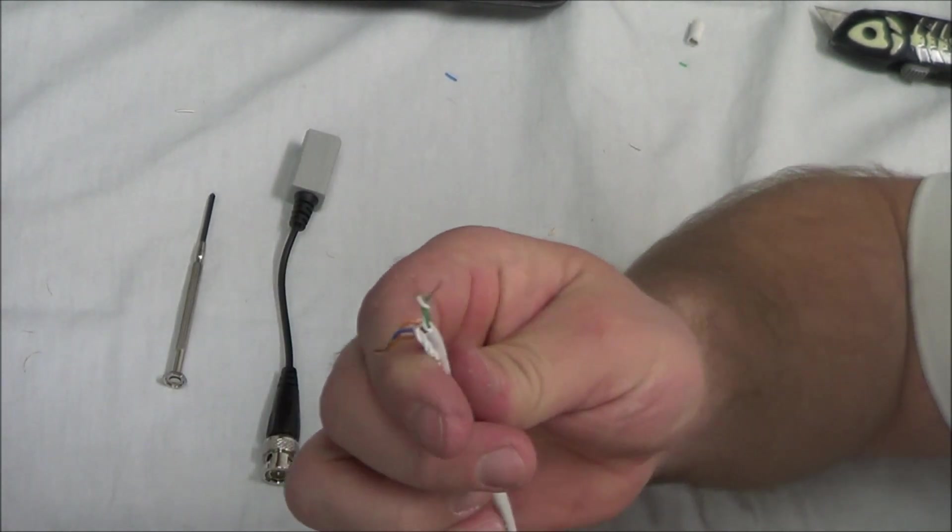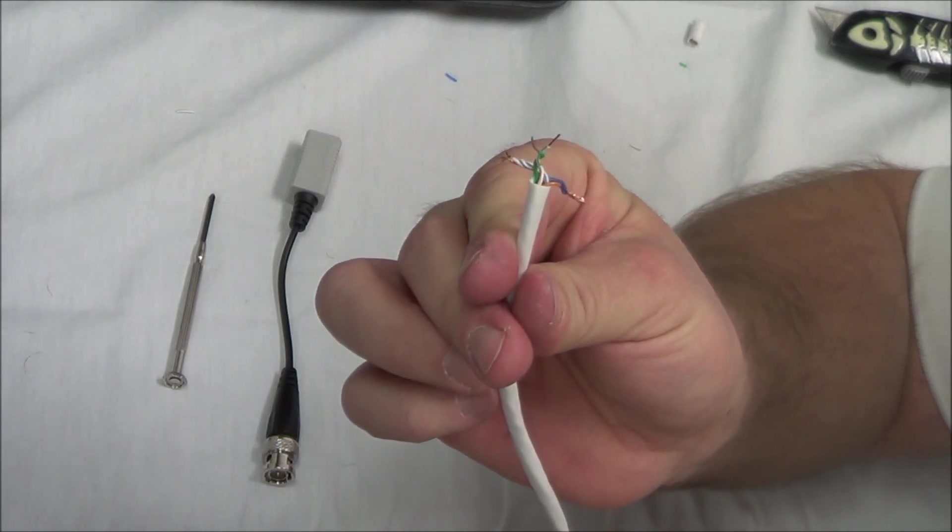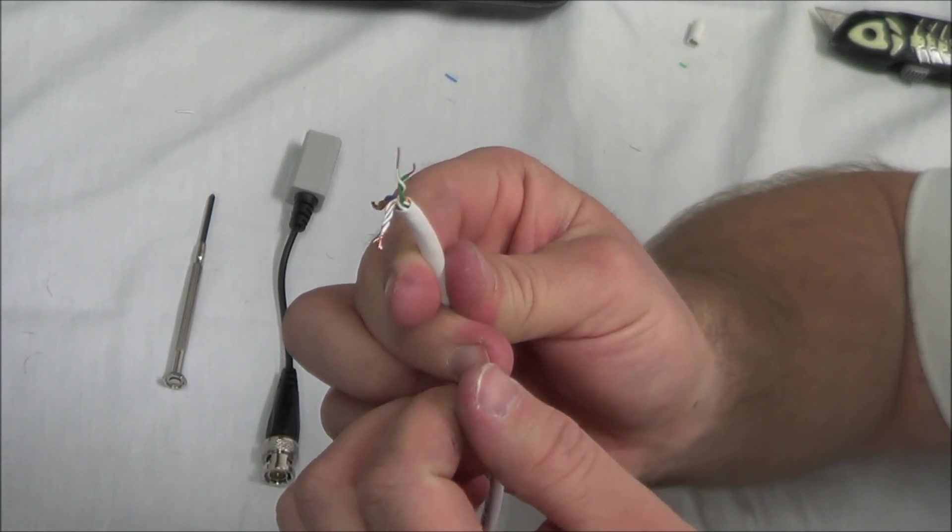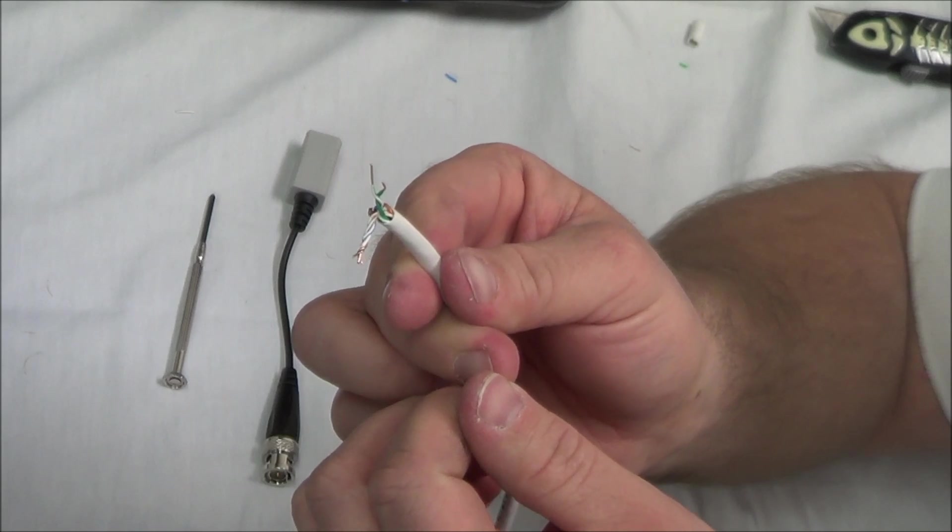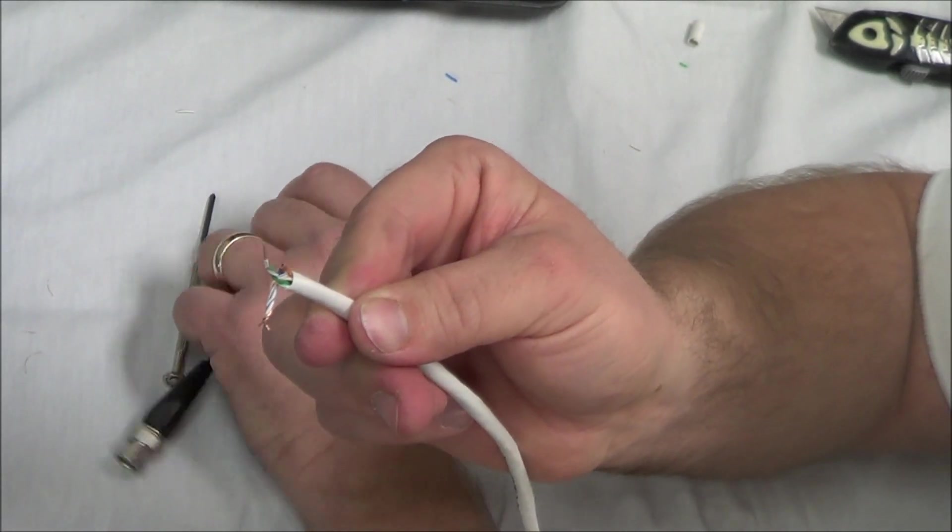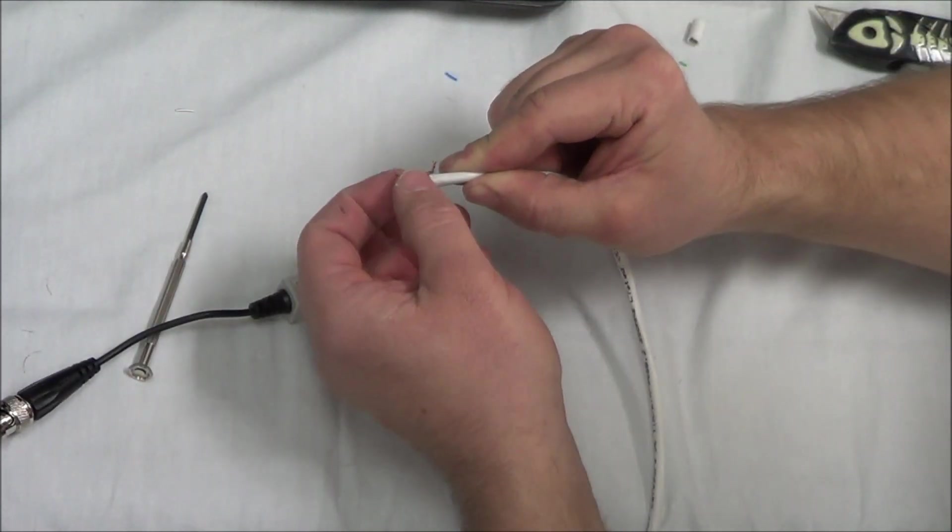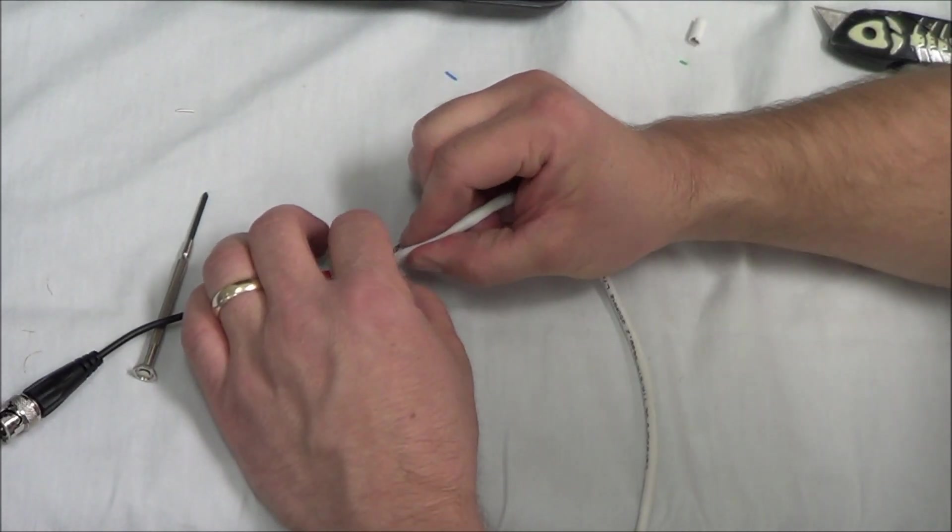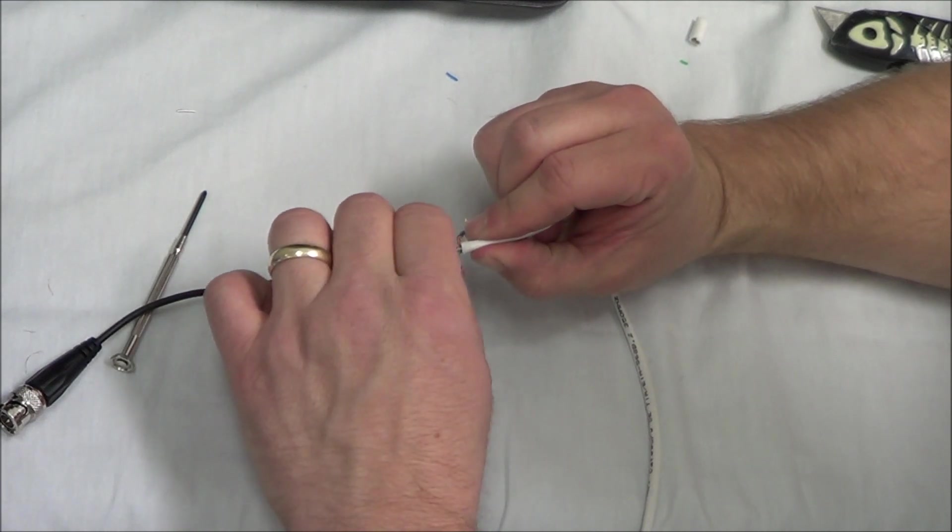Let's take our Cat5 cable. Remember, we decided to use green for video. Now, we're not going to untwist these, but we are going to insert the exposed wires into the positive and negative. So, we'll go solid positive, stripe negative.